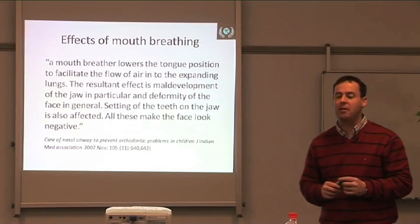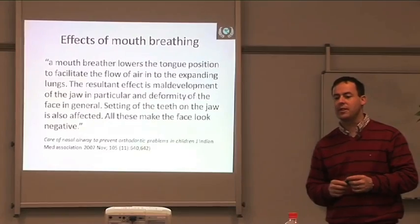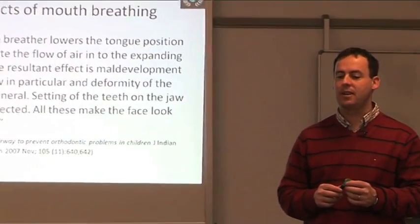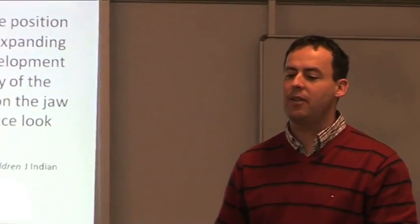Basically, the mouth breather has a longer and narrower face. This paper states: a mouth breather lowers the tongue position to facilitate the flow of air into the expanding lungs. The resultant effect is maldevelopment of the jaw in particular and deformity of the face in general. It's a very strong statement — mouth breathing causes maldevelopment of the jaw and deformity of the face. The setting of the tongue and setting of the teeth on the jaw is also affected, and all of these make the face look negative. Do you know any parent that would like their child to grow an ugly face?